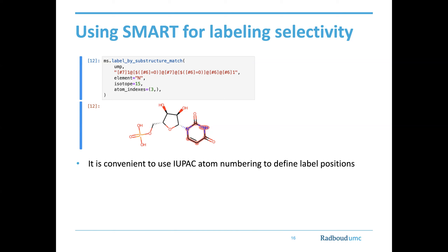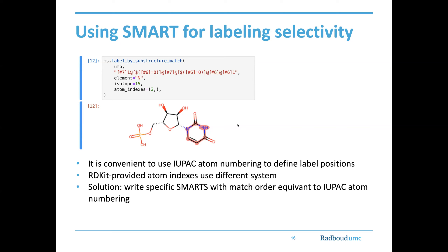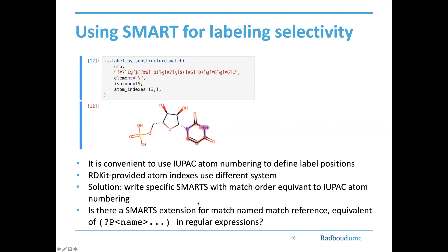For me it's quite convenient, but it's a new approach to atom numbering. Canonical RDKit numbering is just for canonical graphs and is completely different from the numbering system useful for telling a supplier which atom you want labeled. I worked around this by writing SMARTS such that the match order is equivalent to the atom numbering I want. But I wonder if there is any SMARTS extension that would give named match references like in regular expressions — that could be a solution for this kind of problem.